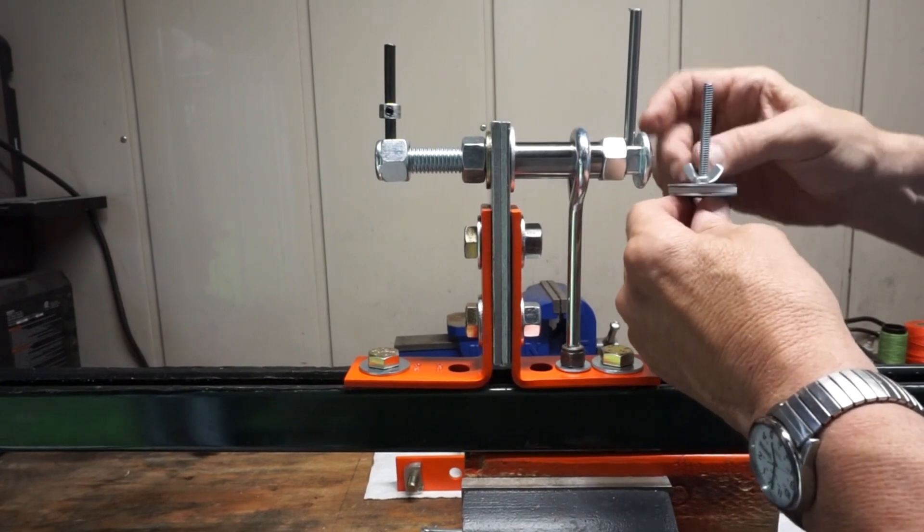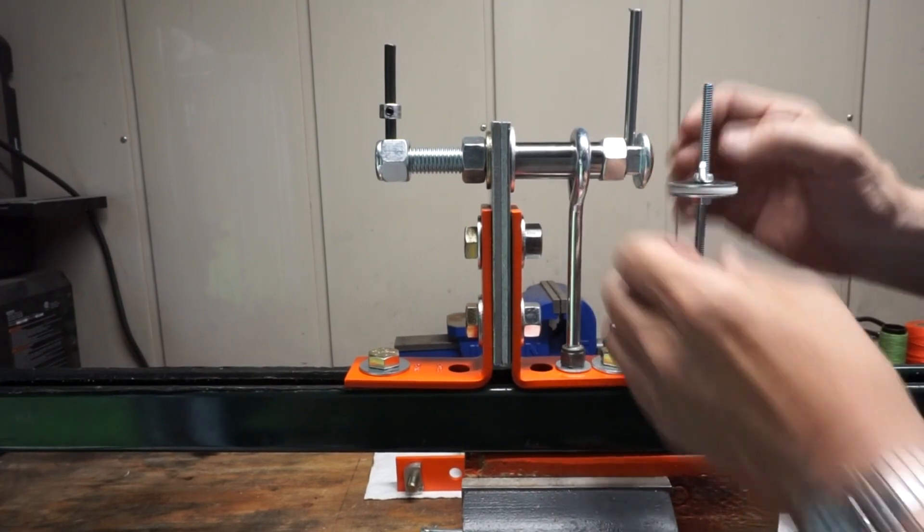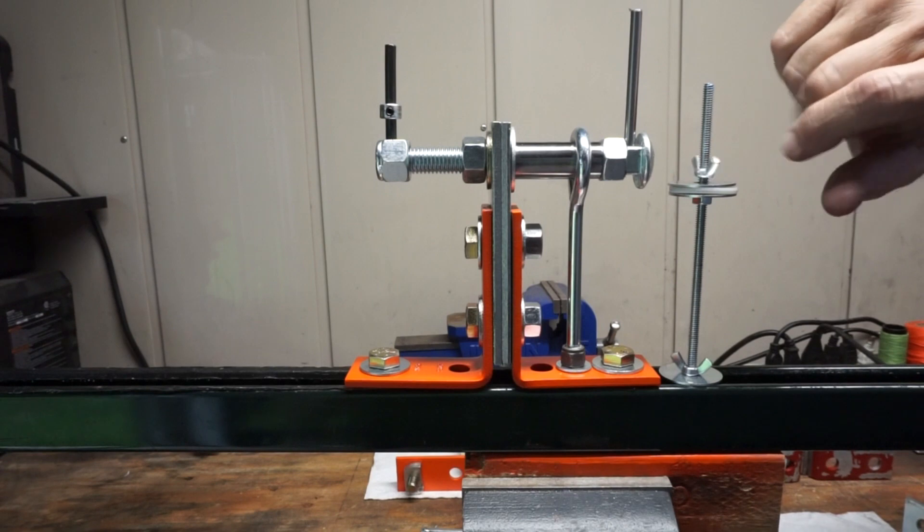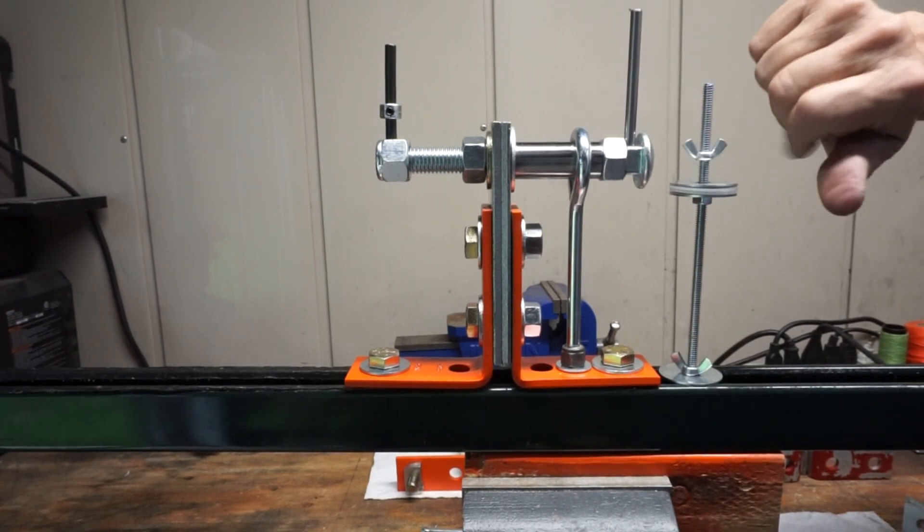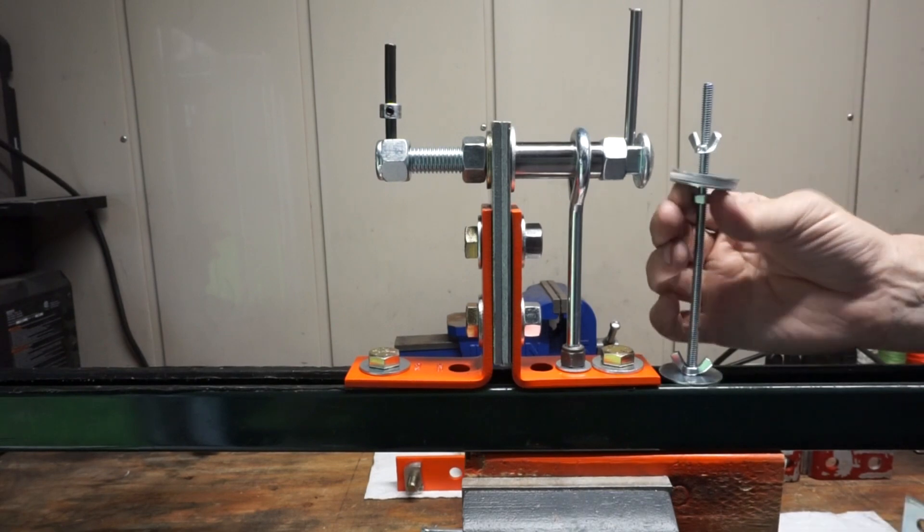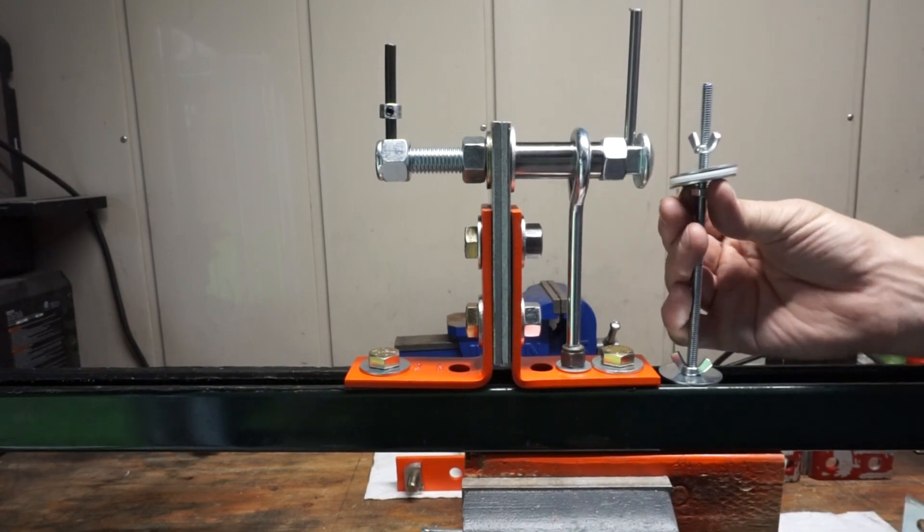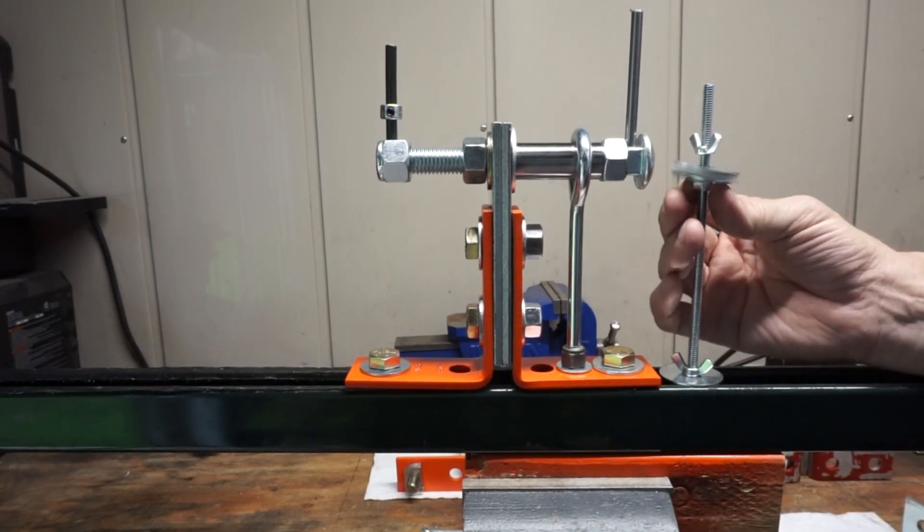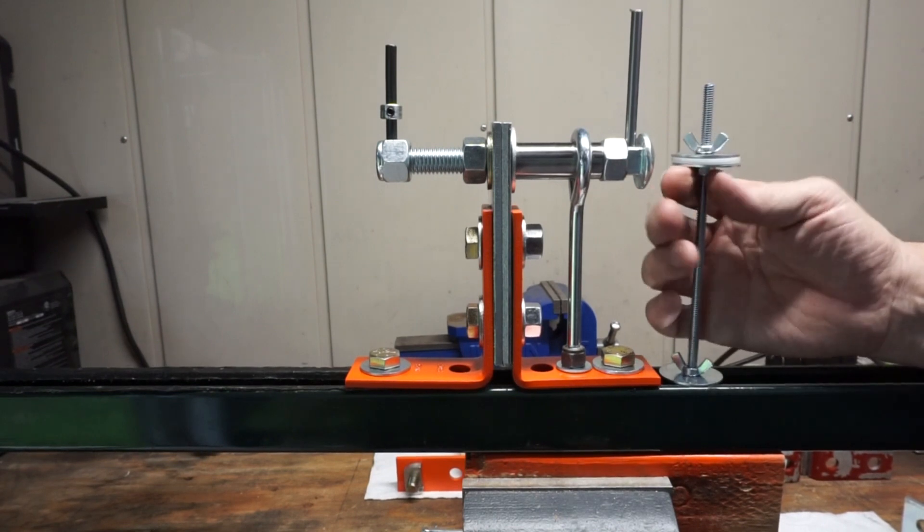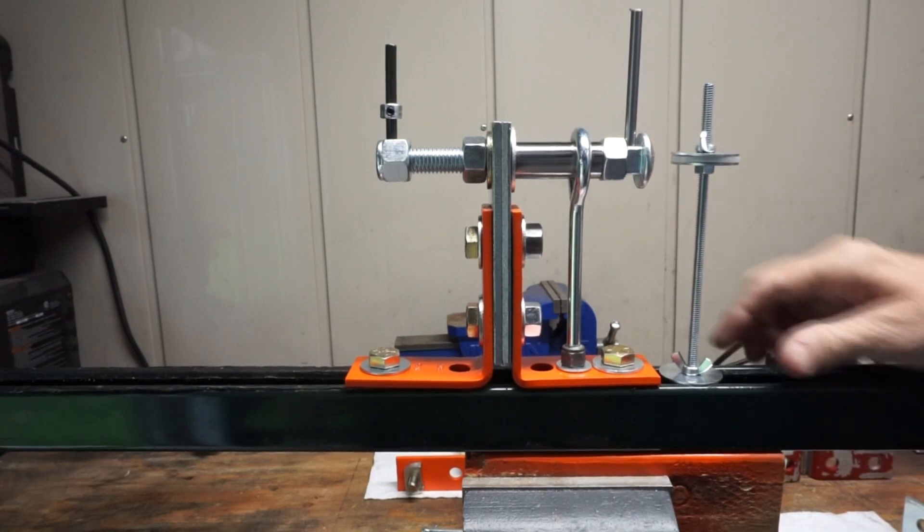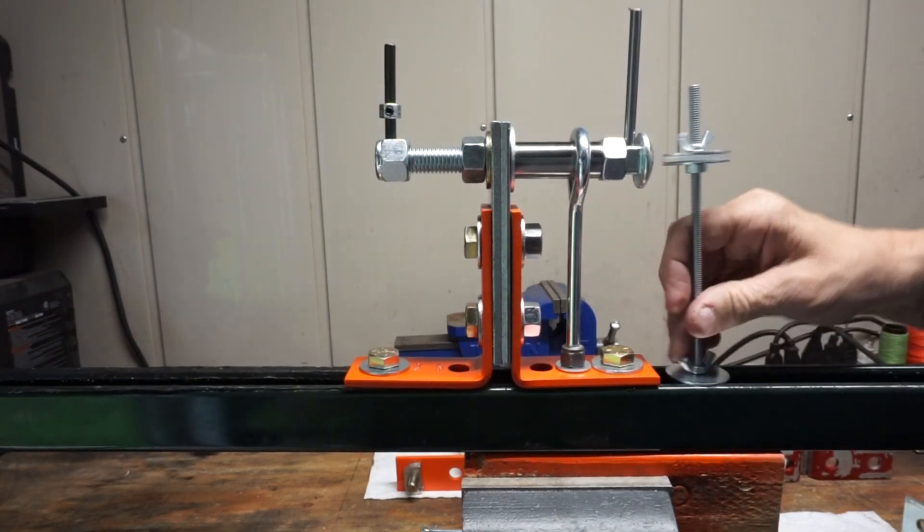I can also position these inside on my string. I'd raise this a little bit more. And I would use this as a string clamp to prevent my string from twisting while I'm serving it. Simple little device. Let me show you what it's made of.